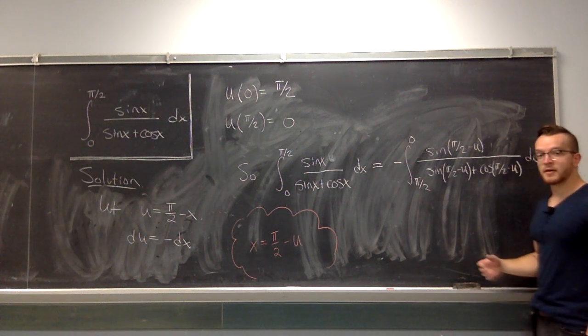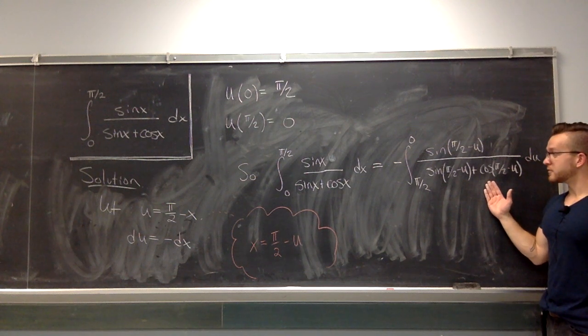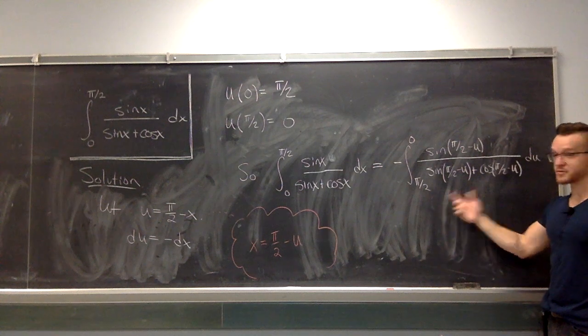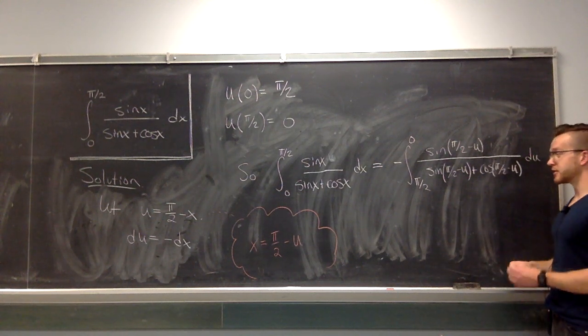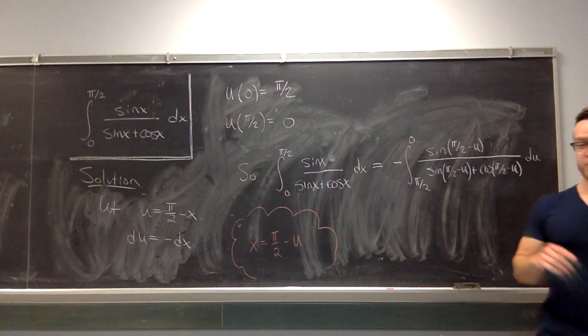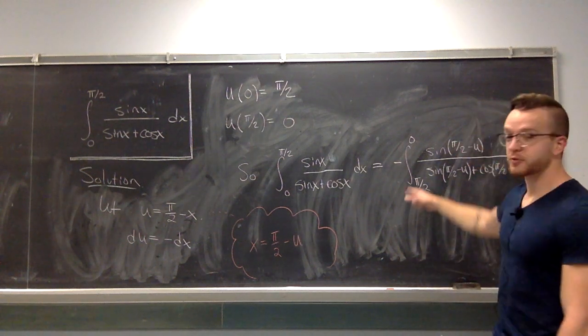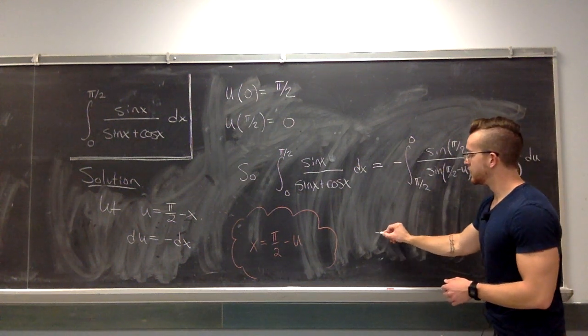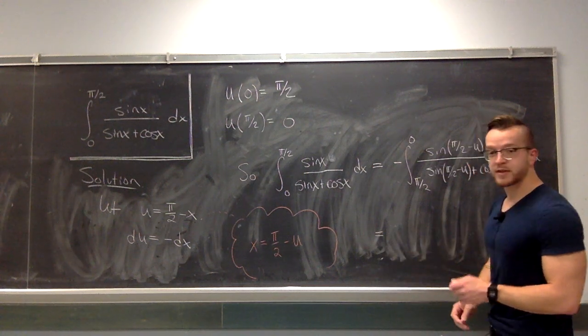Okay. And we've officially transformed the integral to be entirely in terms of u. And you're thinking, Joe, this looks way worse than what we just started with. What are you doing? I agree. But we can use one of the most basic trig identities that we know to rewrite this. In particular, here's the key.